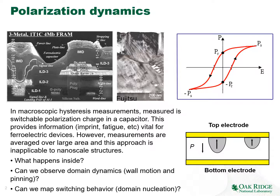In macroscopic hysteresis measurements, we measure the switchable polarization charge in the capacitor — essentially the polarization difference between states. We can also learn about parameters such as imprint (the shift of the hysteresis loop in one direction) and fatigue (how stable hysteresis loops are over time), which is vital for ferroelectric devices. However, these measurements are averaged over large areas, telling us a lot about macroscopic average properties but very little about local mechanisms.